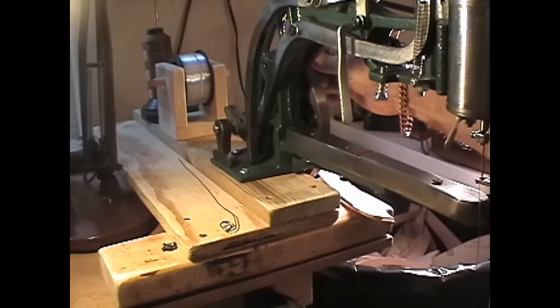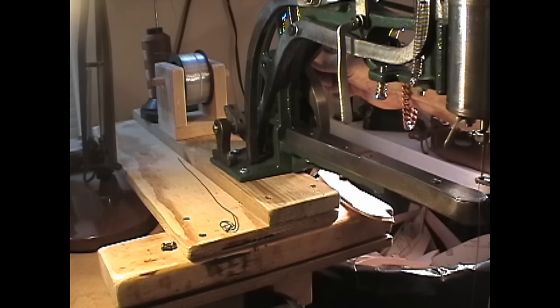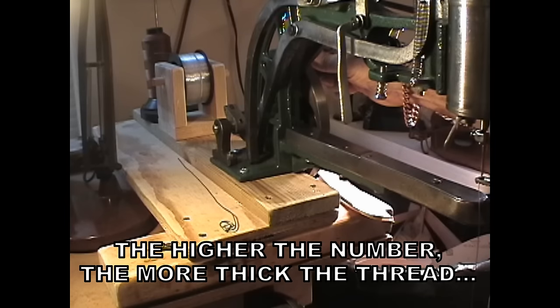A little bit better. Also, there's a thread stand back there. It's in the shot. And back behind the fishing line is a cone of 138 thread. This machine will sew with 138 thread and 69 thread and smaller.